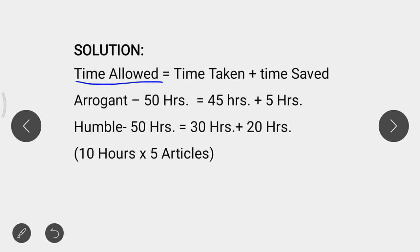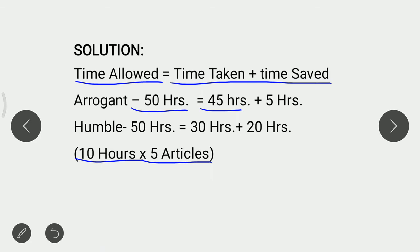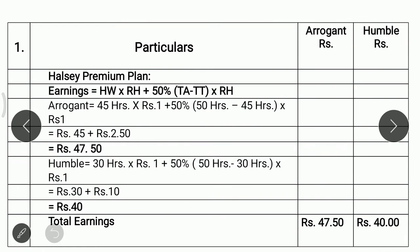Time allowed is equal to time taken plus time saved. Both produce 5 articles. Company gives 10 hours to produce each article, so time allowed is 50 hours. In case of Arrogant, time allowed is 50 hours, he takes 45 hours, so he saves 5 hours. In case of Humble, time allowed is 50 hours, he takes 30 hours, so time saved is 20 hours. Now we calculate earnings of Arrogant and Humble.